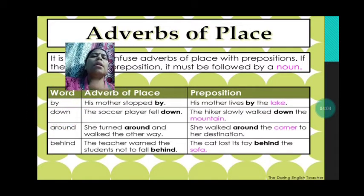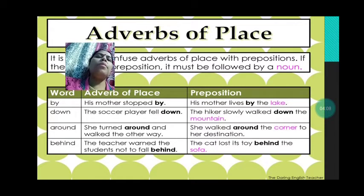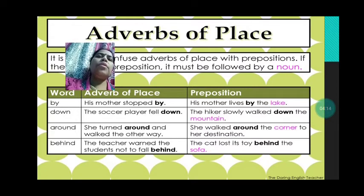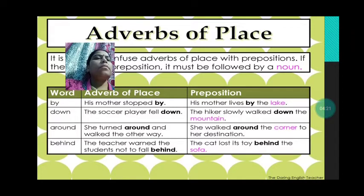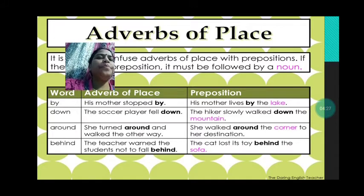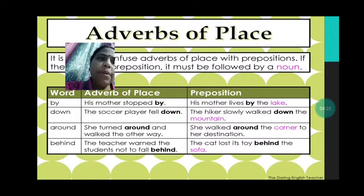Let us understand it. The word is 'by'. We will use 'by' as adverb of place: 'His mother stopped by.' Now how will you know it is a preposition? 'His mother lives by the lake.' Here, 'lake' is a noun. 'By' is followed by a noun — 'by the lake'. So here 'by' becomes a preposition because there is a noun after it.